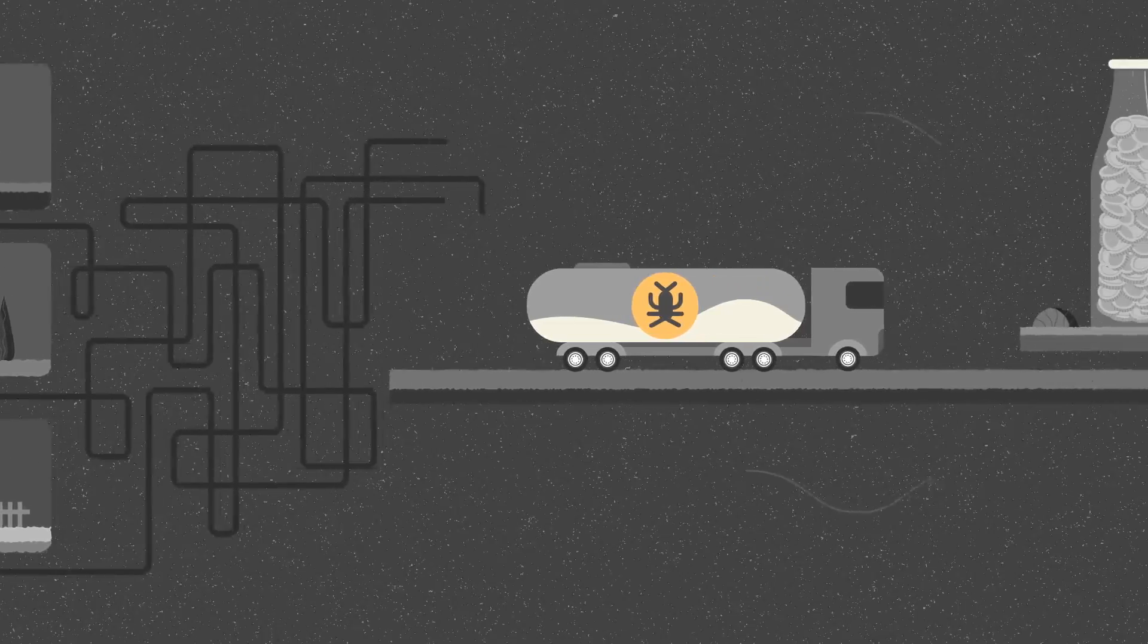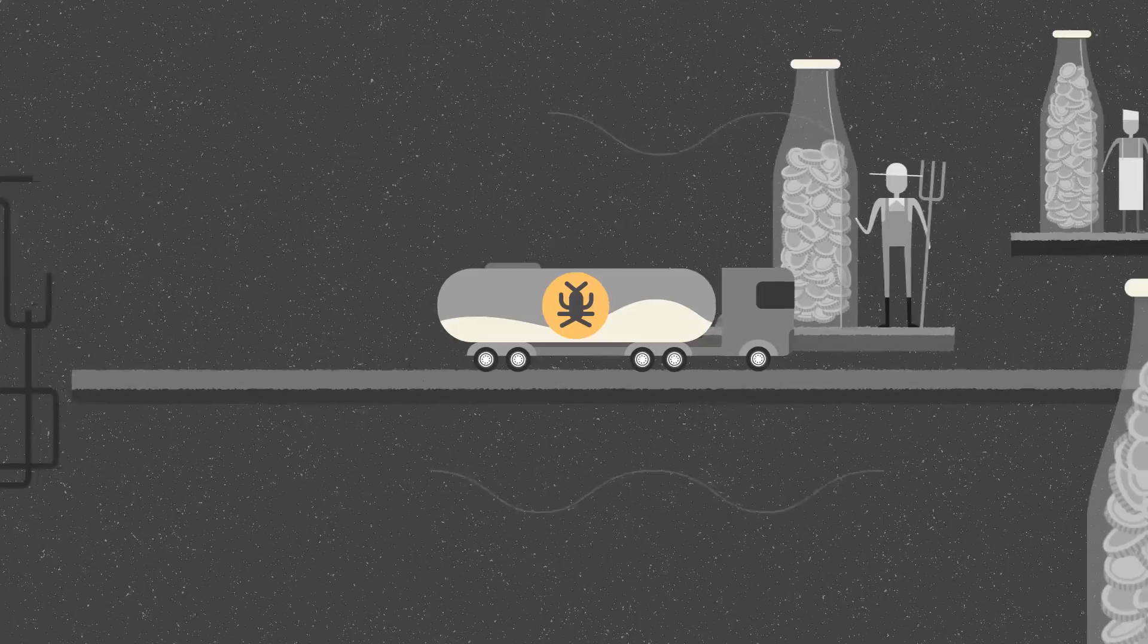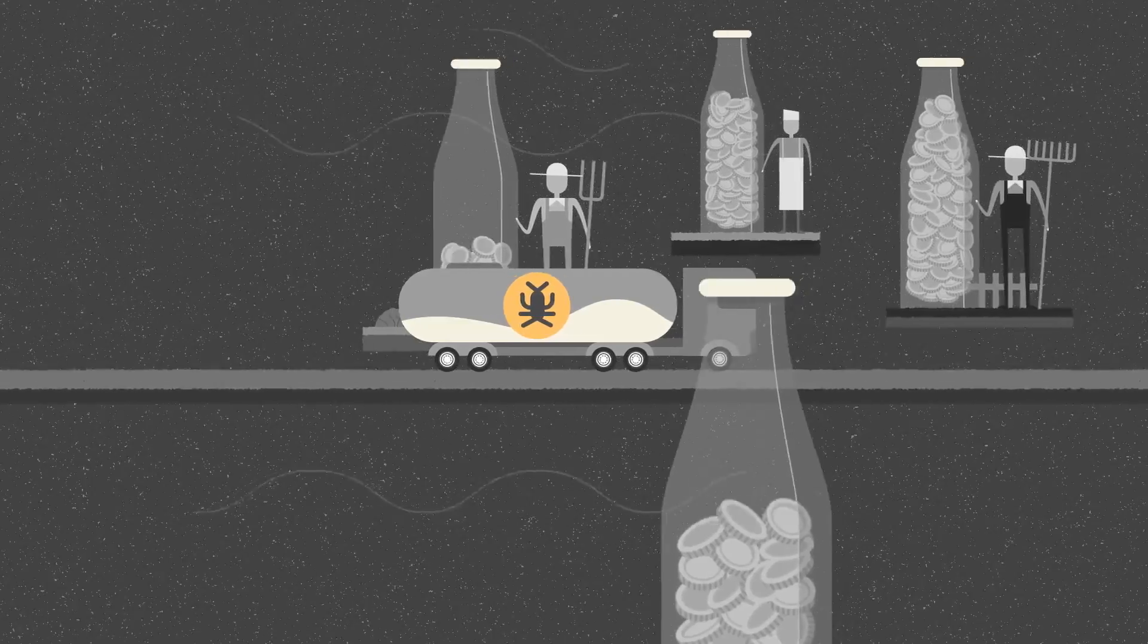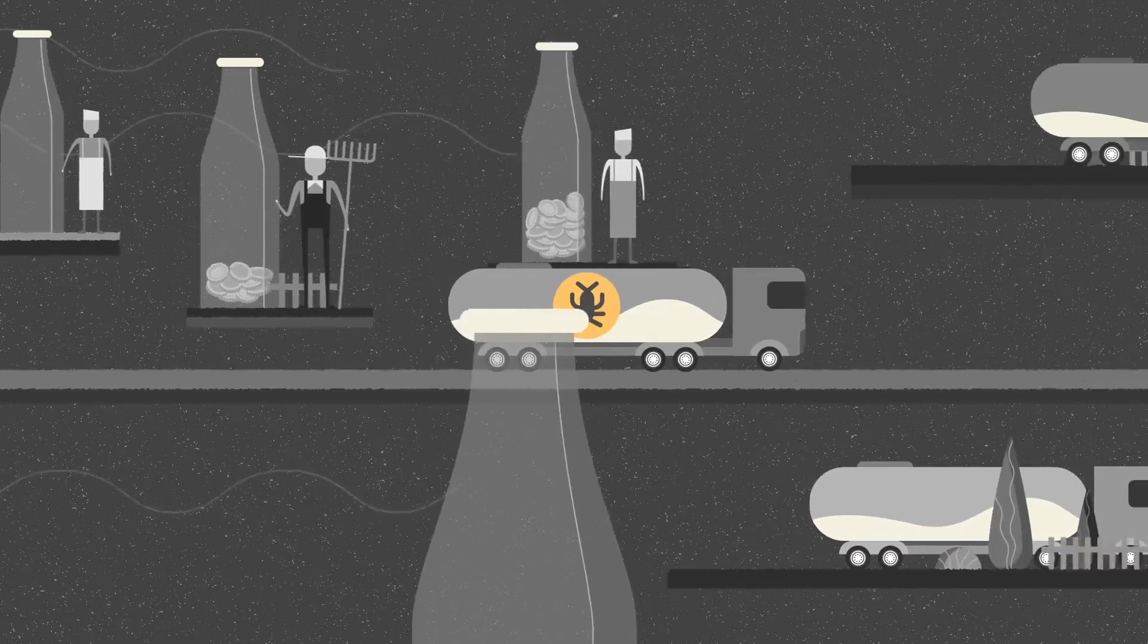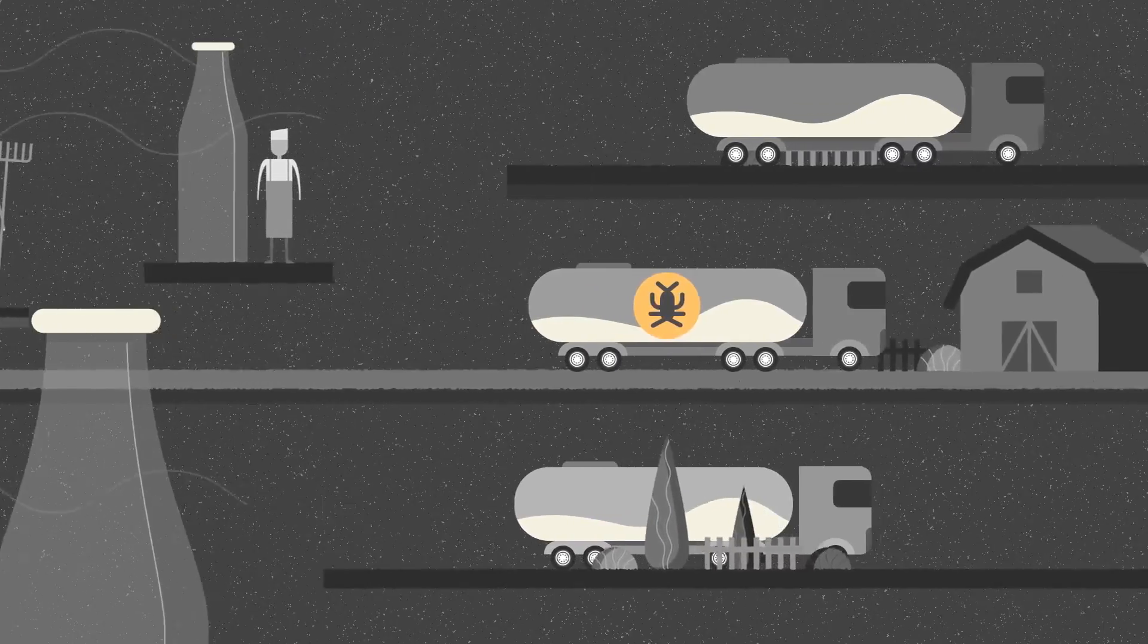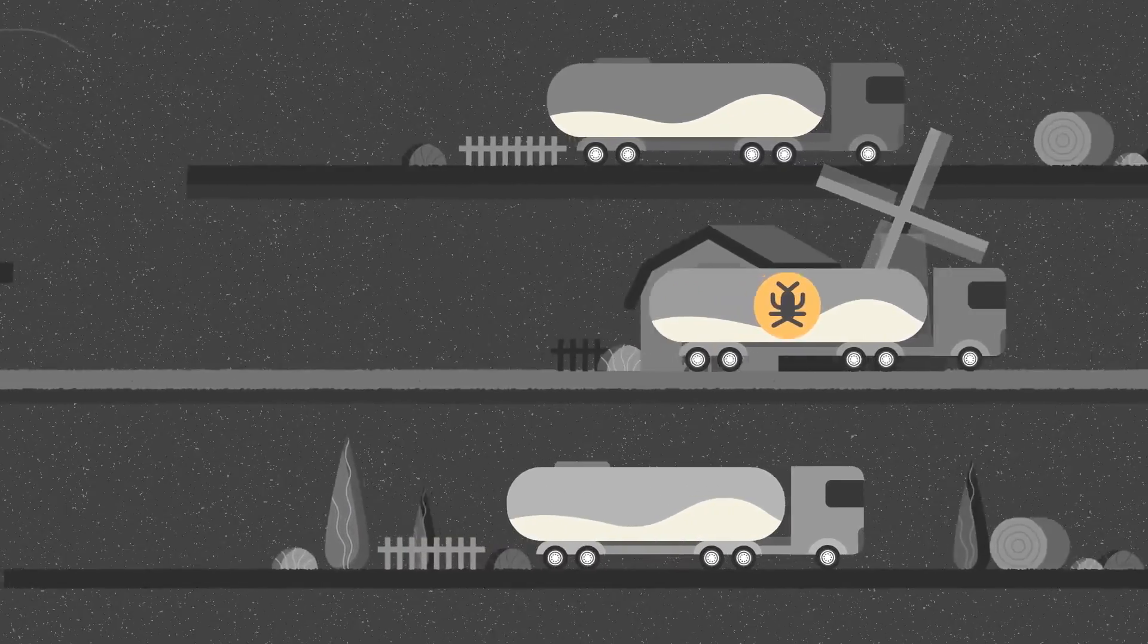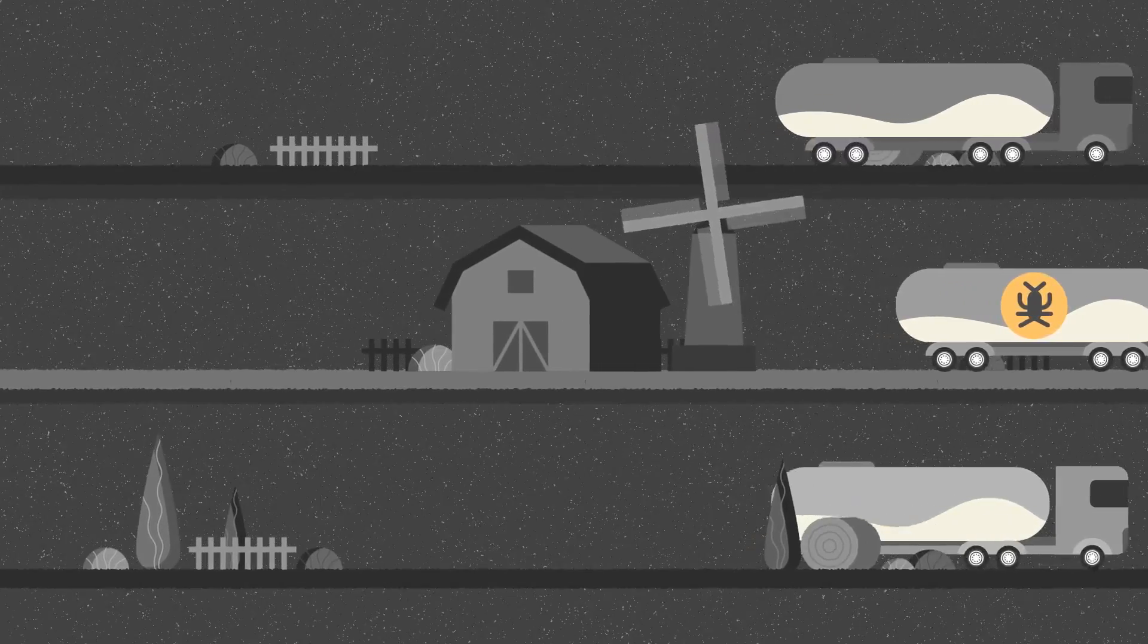If the milk is found to be contaminated it can lead to enormous quantities being destroyed resulting in financial losses for farmers and milk factories involved. This could be avoided by routinely checking upstream in farms.